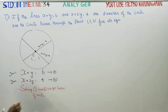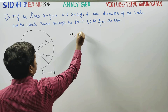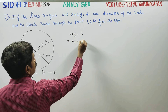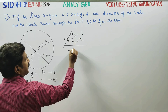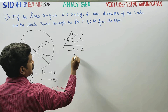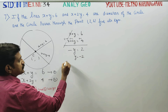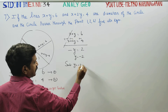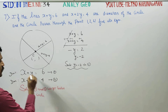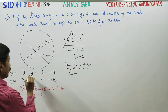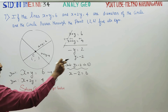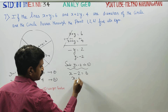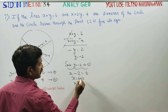Subtracting the equations, y minus 2y equals 6 minus 4, so minus y equals 2, giving y equals minus 2. Substituting y equals minus 2 into equation 1: x plus y equals 6, so x plus (minus 2) equals 6, therefore x equals 8.